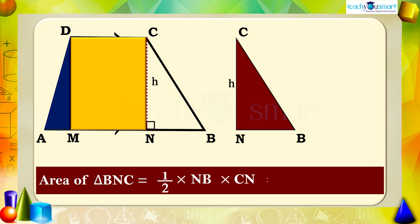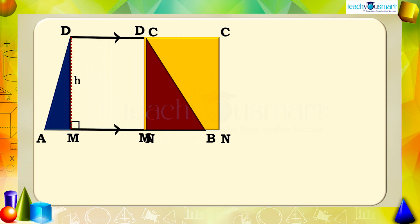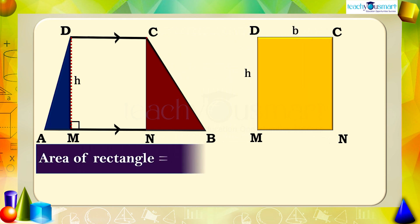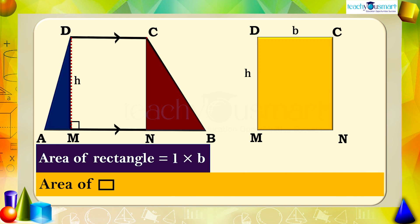The area of a rectangle with length L and breadth B is L multiplied by B. Since DC equals b units and DM equals h units, the area of the rectangle MNCD equals b multiplied by h.